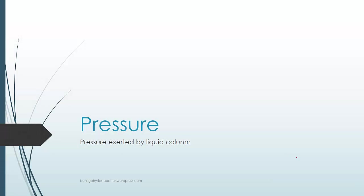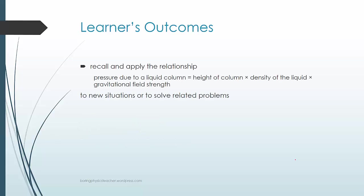In this lesson, we are going to explore the idea of pressure exerted by a liquid column. The learner's outcome is to understand that the pressure due to a liquid column equals the height of the column multiplied by the density of the liquid and the gravitational field strength.